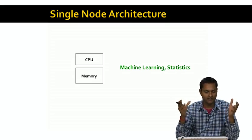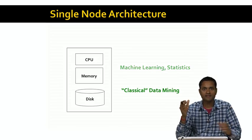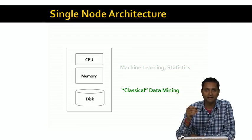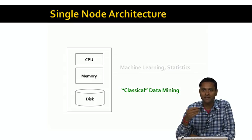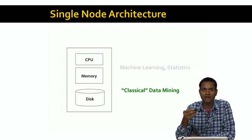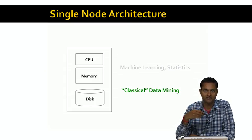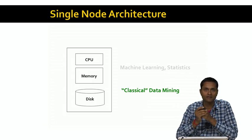That's where data mining comes in. Classical data mining algorithms look at the disk in addition to CPU and memory. The data is on disk, you can only bring in a portion of the data into memory at a time, process it in batches, and write back partial results to disk. This is the realm of classical data mining algorithms.